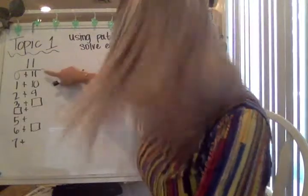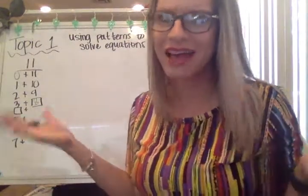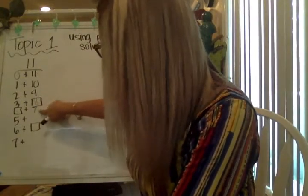Oh, well if I look at this pattern, eleven, ten, nine, I know that eight plus three, eight, nine, ten, eleven. Yeah, that's right. So we can find out that pattern this way. Well if I'm going eleven, ten, nine, eight, seven. This on this side must be four.